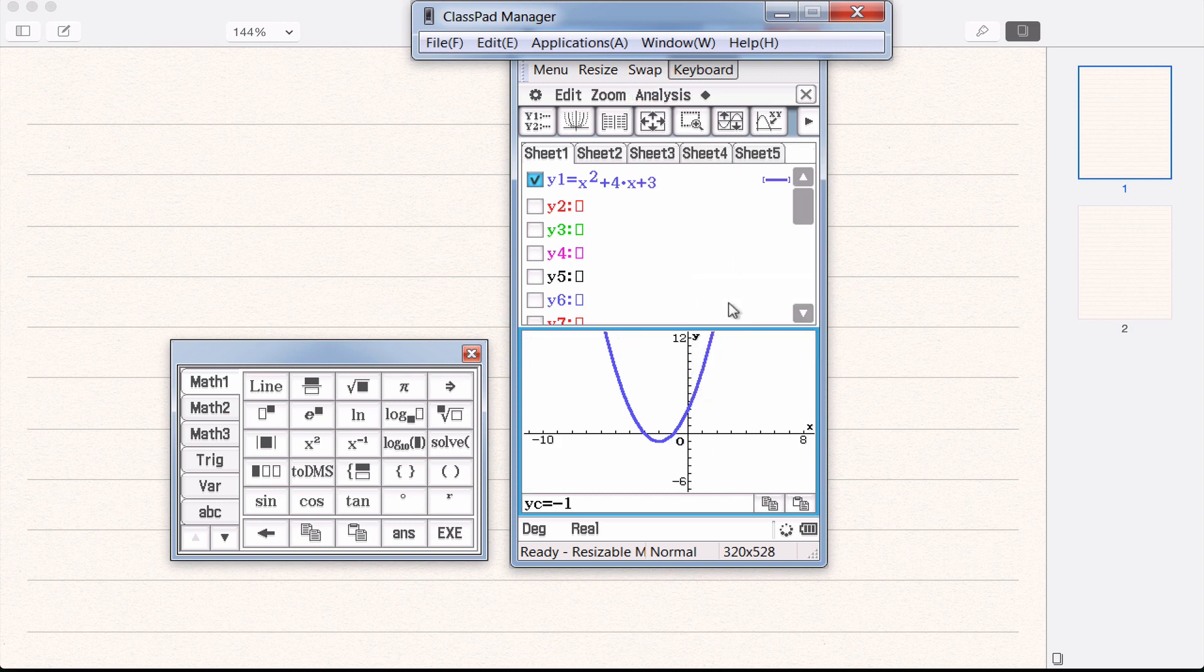Next, the y-intercept is something that's useful for us. Here we go, 0, 3. 0, 3.